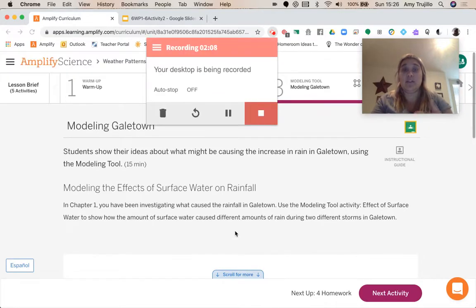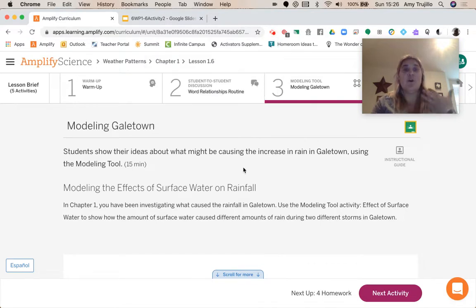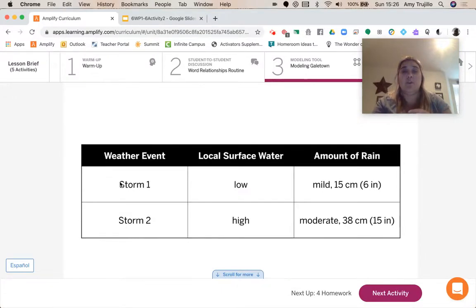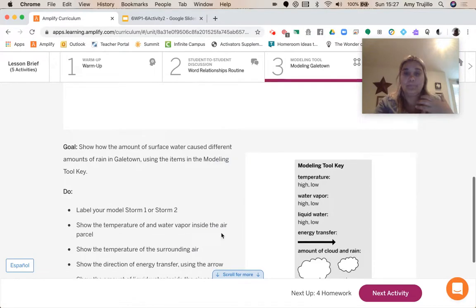And you guys are going to model the effects of surface water on rainfall. So in chapter one, you've been investigating what caused rainfall in Gale Town, and we're going to use the modeling tool, the effect of surface water, to show the amount of surface water caused different amounts of rain during the two different storms. So we've got before we put in the lake and then after we put in the lake. And those were just those first two storms that we looked at.